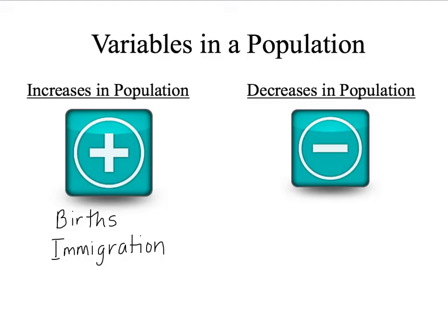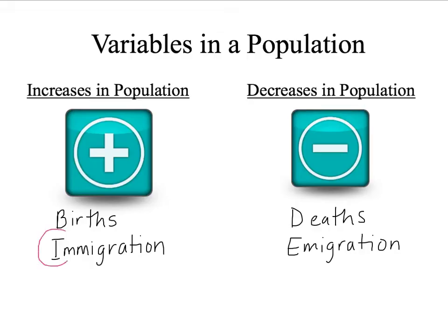There are two things that can decrease populations. The first is deaths — anything that causes more deaths will decrease that population. The second is emigration: exiting or leaving a population. If a robin leaves its population and goes to a different one, that's emigration. An easy way to remember: I for immigration means into — organisms moving into a population. E for emigration means exit — organisms exiting out of a population.